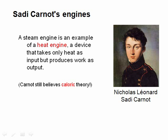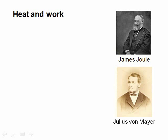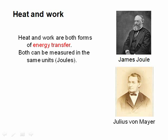This was all sorted out in the 1840s by two men, James Joule and Julius von Mayer. They realized that heat and work were both forms of energy transfer, that there was an equivalence between them, and that they could both be measured in the same units. The modern unit of energy is named after James Joule — the joule. Once you can measure heat and work in the same terms, you can state the first law of thermodynamics.